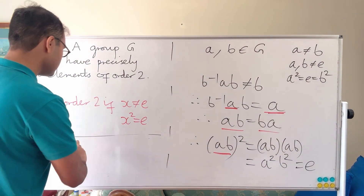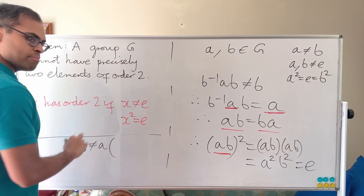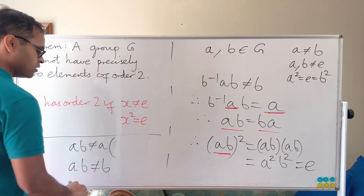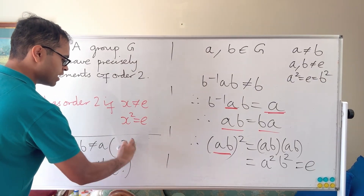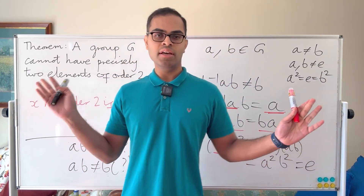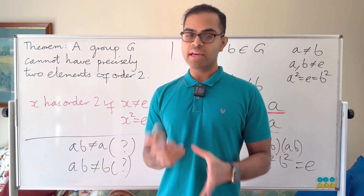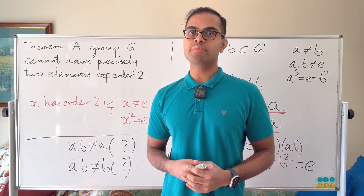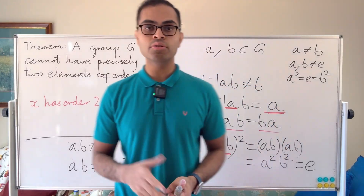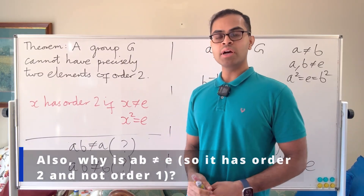And that is a contradiction! ab has order 2, but ab is not equal to a — if it were, that would imply b = e — and ab is not equal to b either. So ab is a third element of order 2, contradicting our assumption that there were precisely two. Therefore, a group cannot have precisely two elements of order 2.